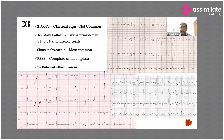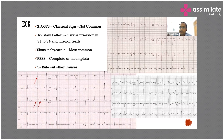The fourth ECG sign is complete or incomplete right bundle branch block. As seen in the ECG shown in the picture, there is right bundle branch block pattern in V1 to V3. These ECG changes can raise suspicion of pulmonary embolism, but they are not specific or sensitive and should not be used alone to rule in or rule out pulmonary embolism.